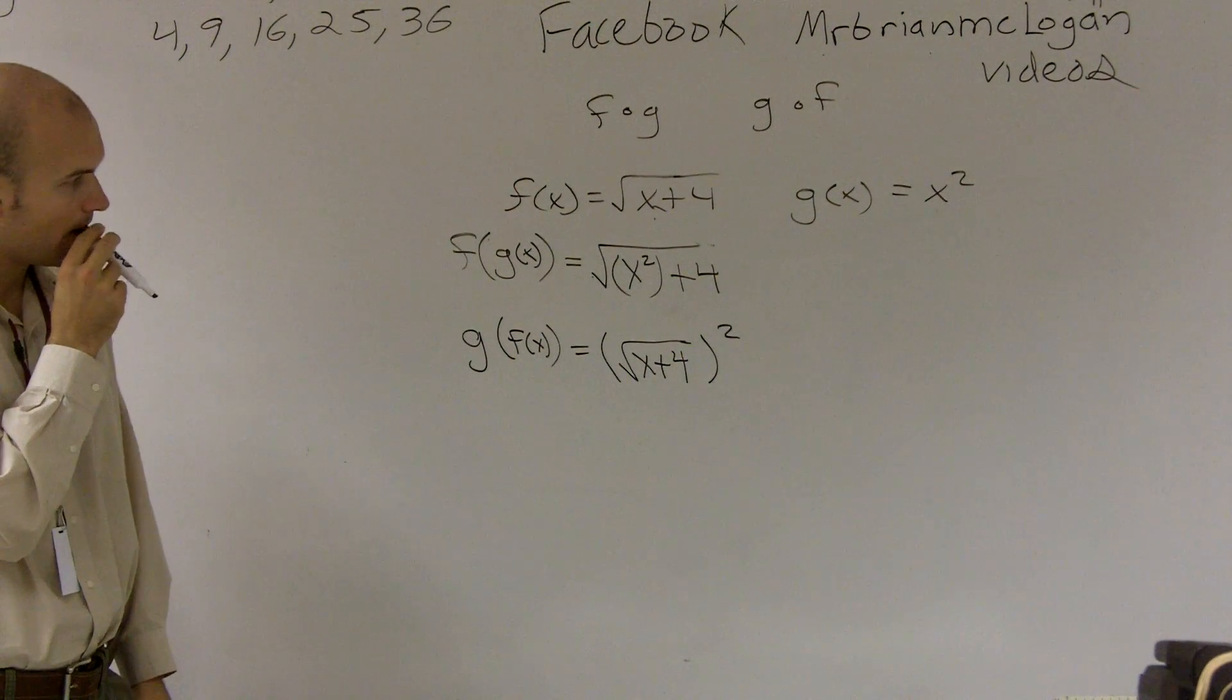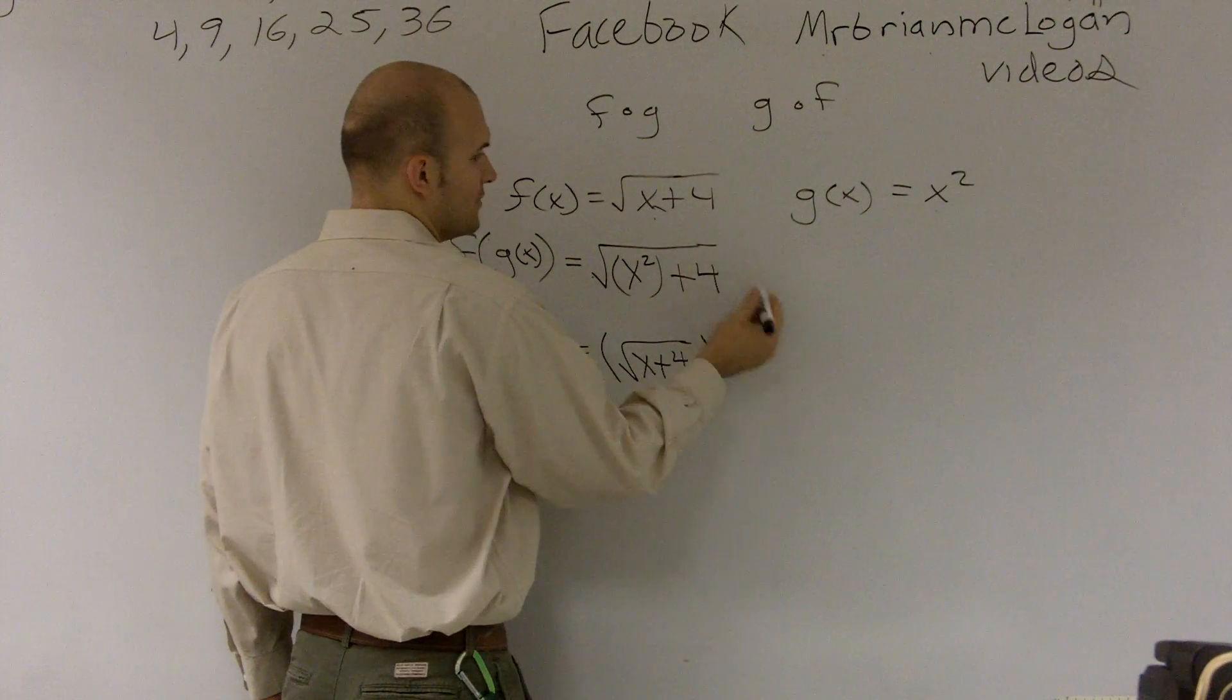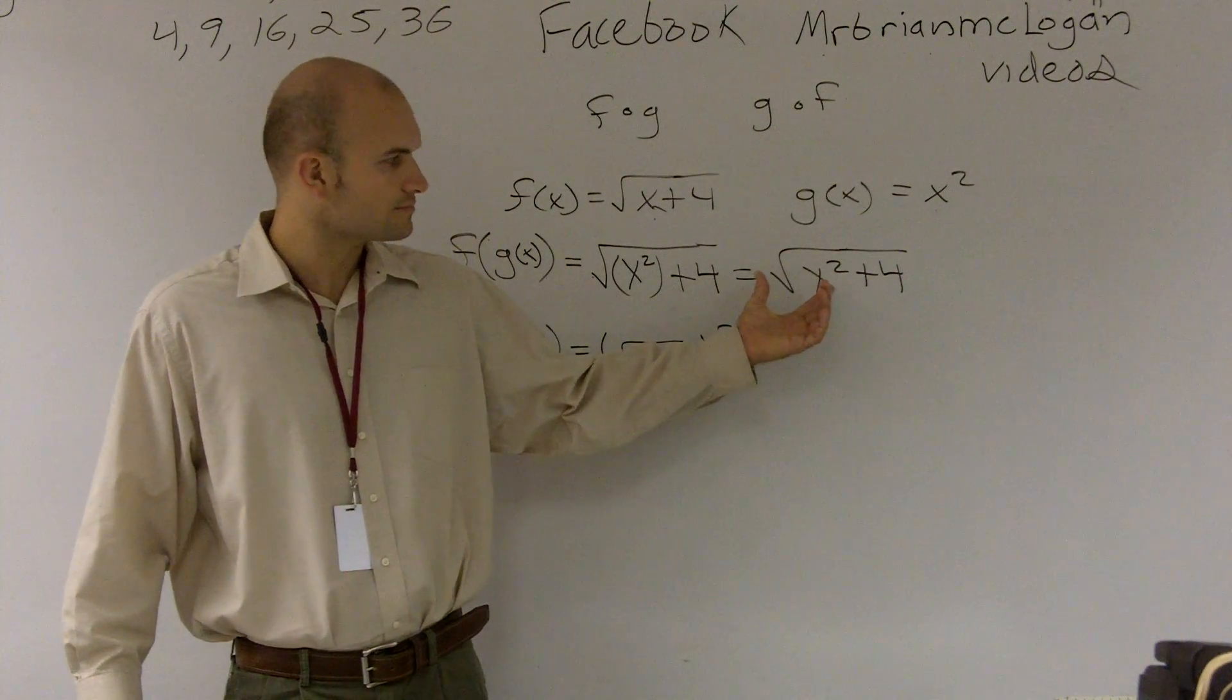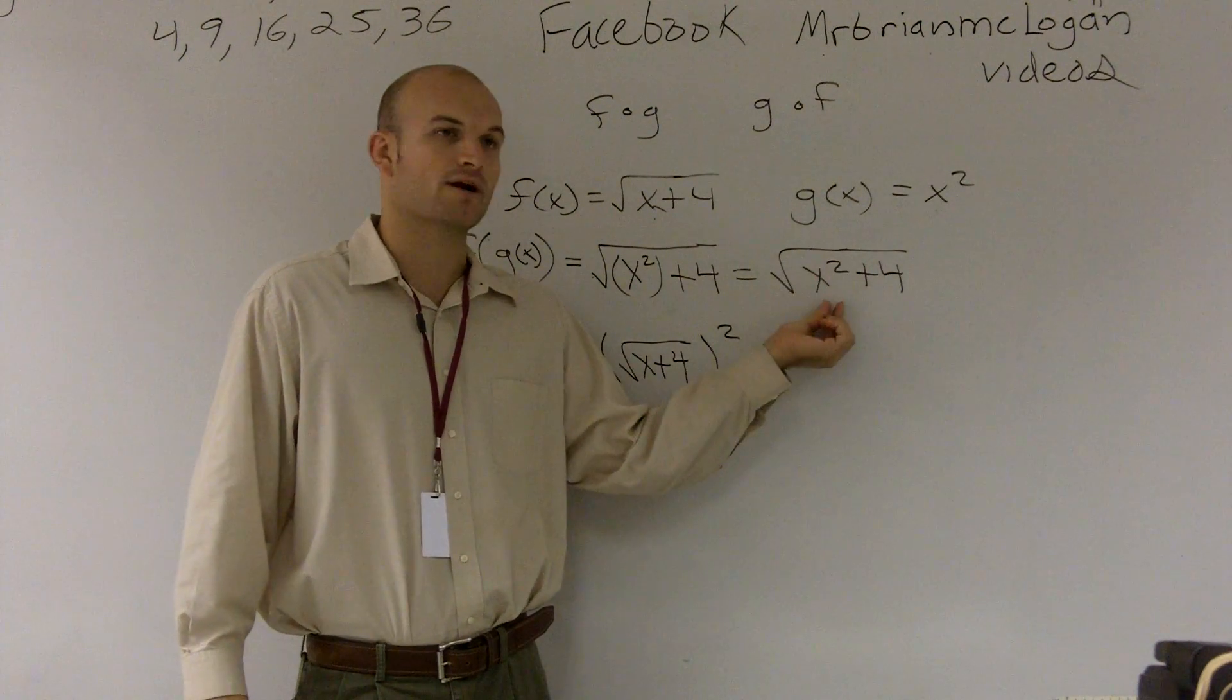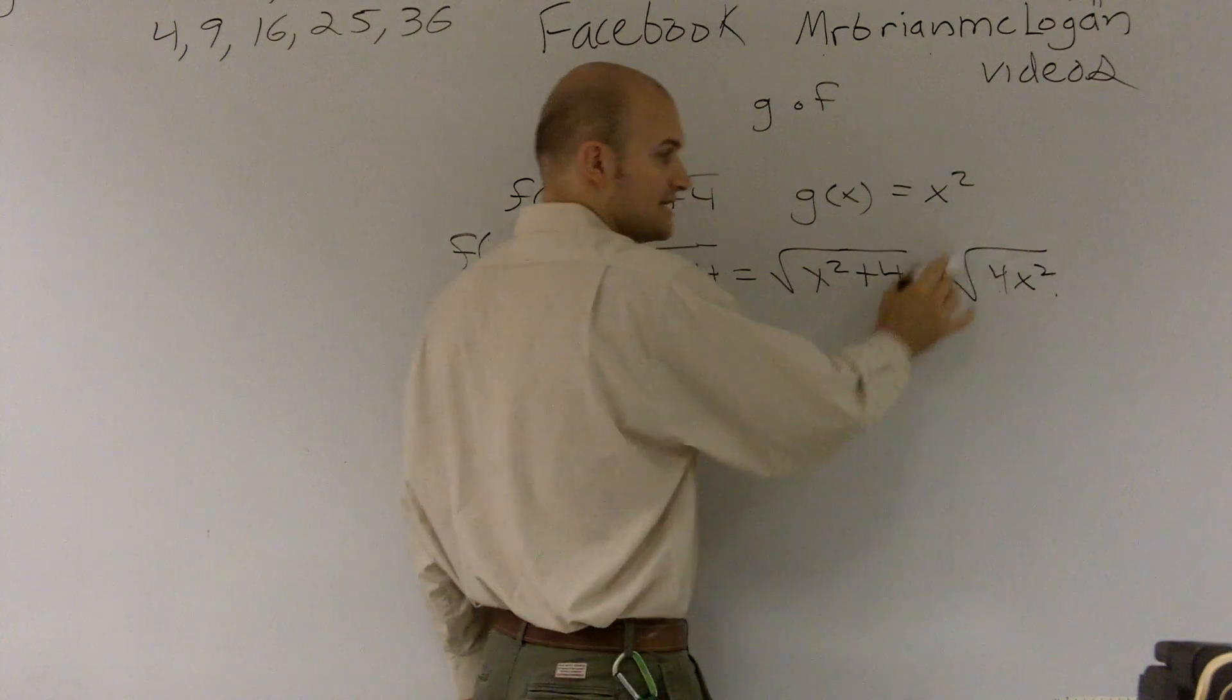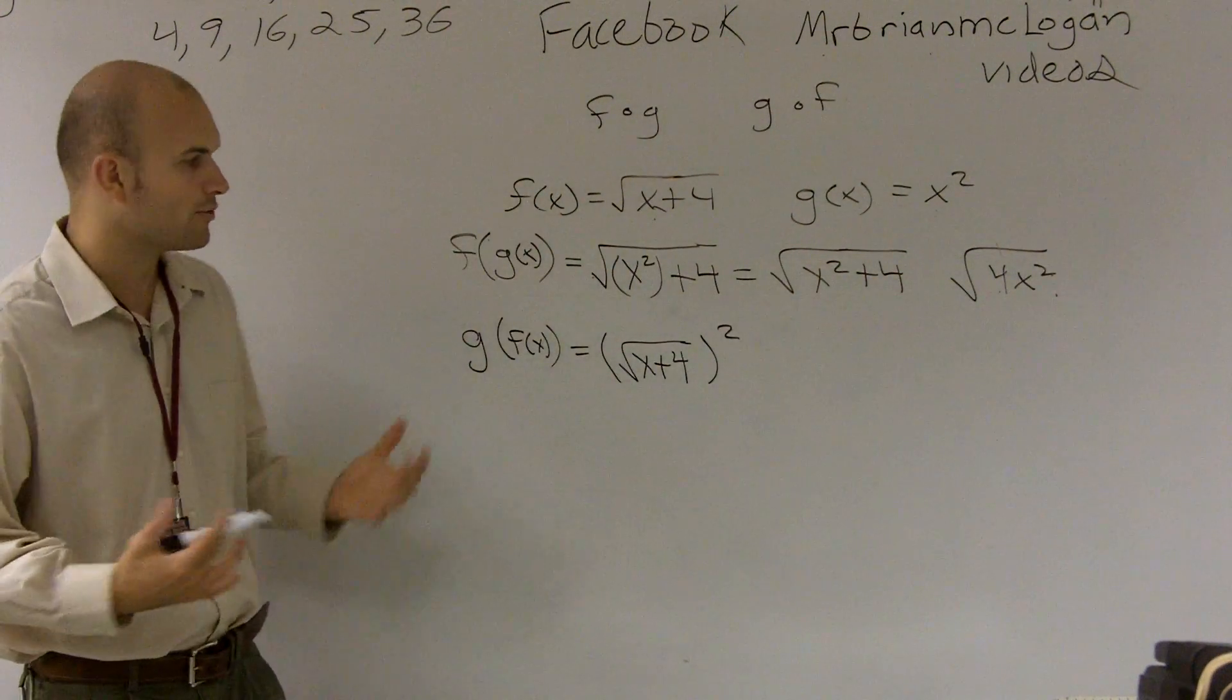Student asks: How come for f of g you didn't just get x plus 2? The reason why is, if you look at it, your final answer is going to be x squared plus 4. Because when you're doing this distribution of radicals, you cannot separate these as two different terms. You can't take the square root of x squared and the square root of 4. If it was 4x squared, then yes, you can take the square root of 4 and the square root of x squared. But since you're adding or subtracting, you cannot separate them.